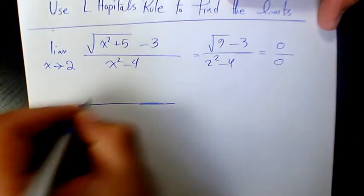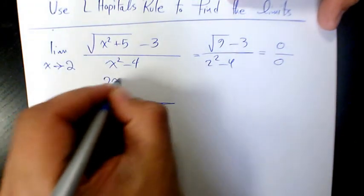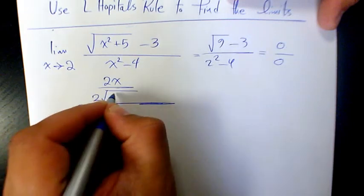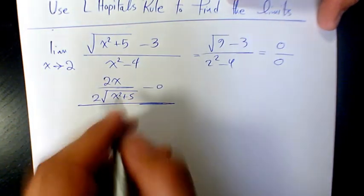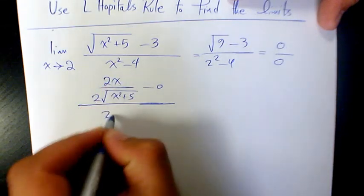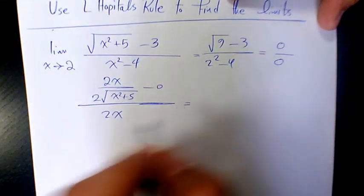The derivative here is going to be 2x over 2 root x squared plus five. Derivative of negative three is zero. Derivative of x squared is 2x, derivative of negative four is zero. The twos cancel out.